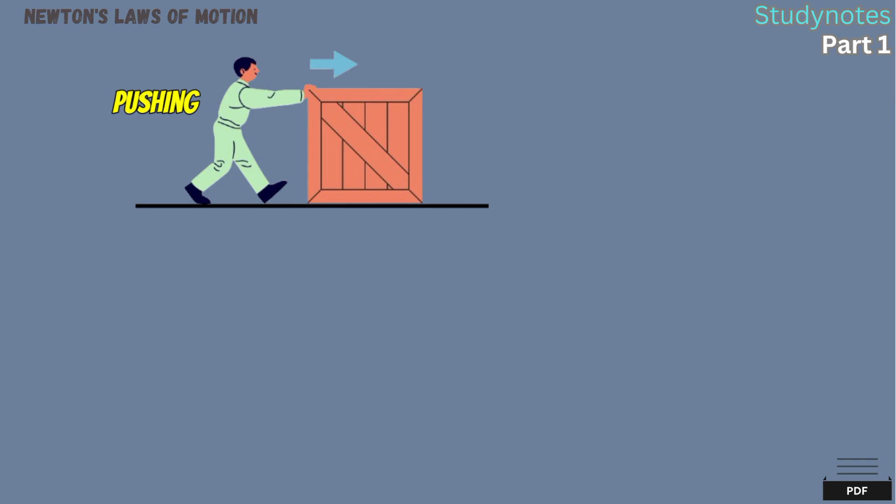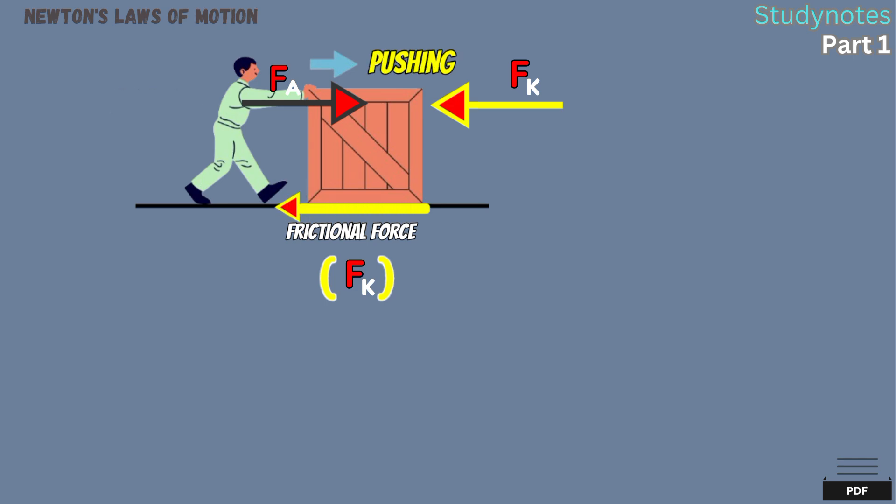So, let us assume that the crate is moving on rough surfaces. That leads us to introduce the frictional force, which is the force acting in between the contact of surface and the bottom of crate. The frictional force is always acting in the opposite direction to the applied force. As he pushes to the right, the frictional force will be to the left.